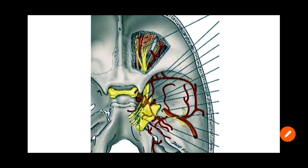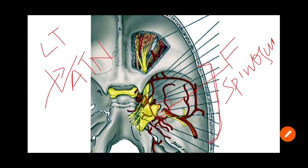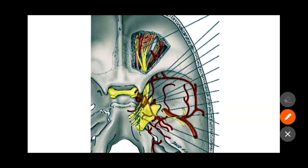The middle meningeal artery ascends upwards deep to the lateral pterygoid muscle, then passes between the two roots of the auriculotemporal nerve, and enters the cranial cavity through the foramen spinosum. In the foramen spinosum it moves laterally on the floor of the middle cranial fossa, then turns upward and forward, and in the greater wing of the sphenoid it divides into the frontal and parietal branches.